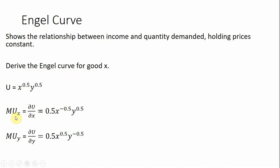We start with the marginal utility of good X, which is the partial derivative of the utility function with respect to good X. Bring down the 0.5 in front, and then X to the 0.5 minus 1, leaving X to the minus 0.5. We do the same thing to get the marginal utility of good Y, taking the partial derivative with respect to good Y.